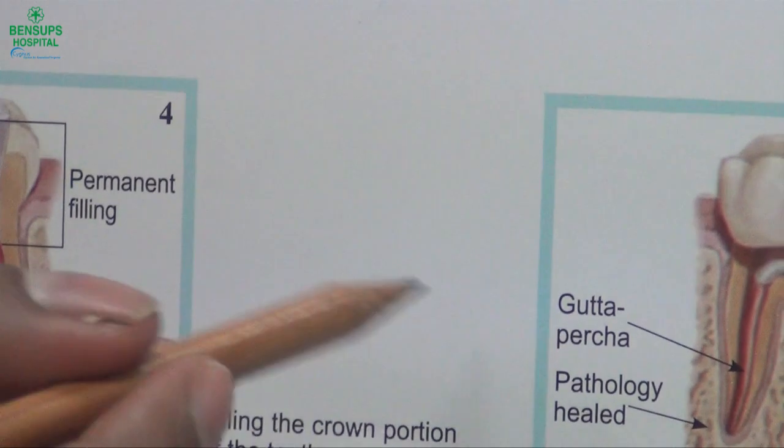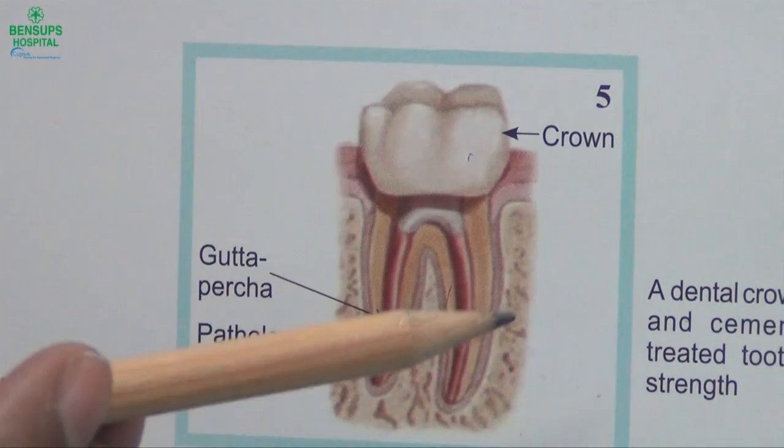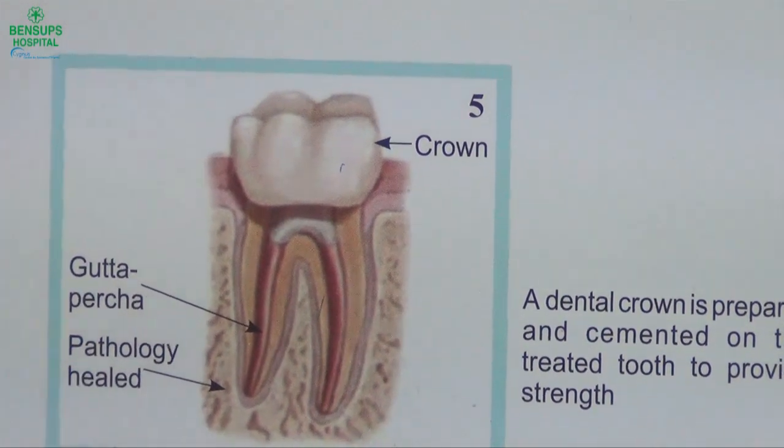We advise the patient to go for a crown after 2–3 weeks following the permanent filling. Traditionally, RCT was done in multiple sittings — we used to call patients 3–4 times for a single tooth. But now we prefer to do RCTs in a single appointment, depending on the infection, mobility of the teeth, and the overall condition of the teeth.